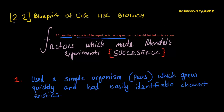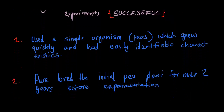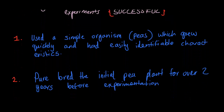All these techniques I'm going to be describing are closely linked. Number one: he used a simple organism — peas — which grew quickly and had easily identifiable characteristics. Since these peas were readily available and grew very quickly, he was able to use them efficiently. The characteristics could be things like one pea being green and one yellow, or one plant being tall and one short — something he could easily identify.